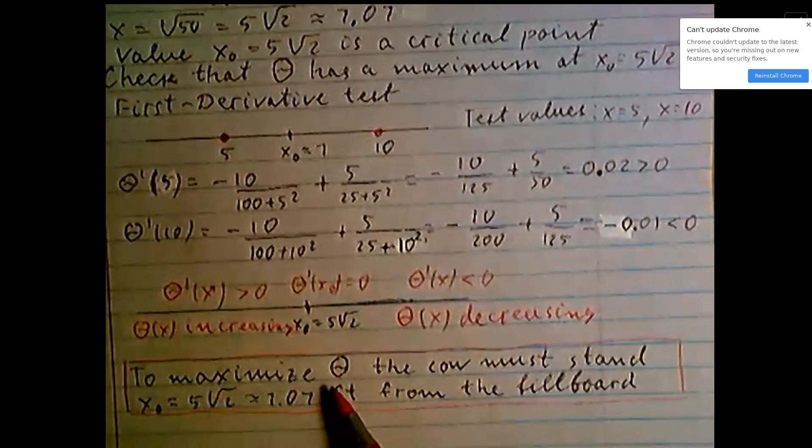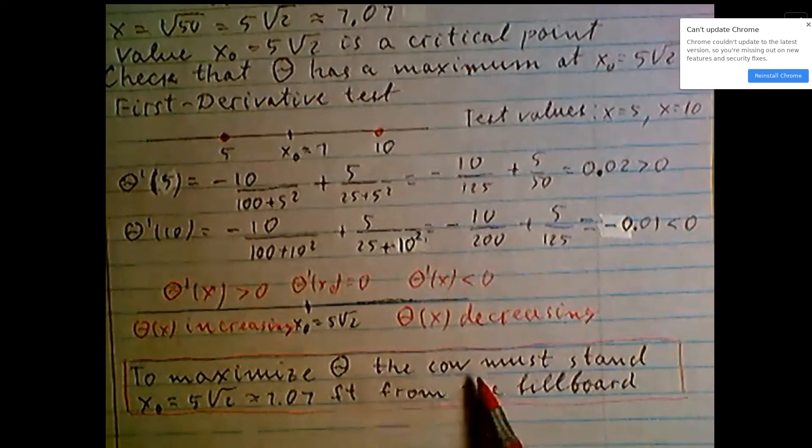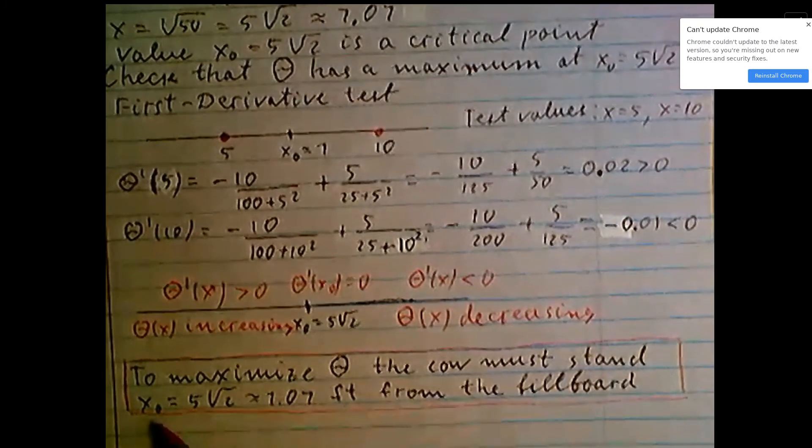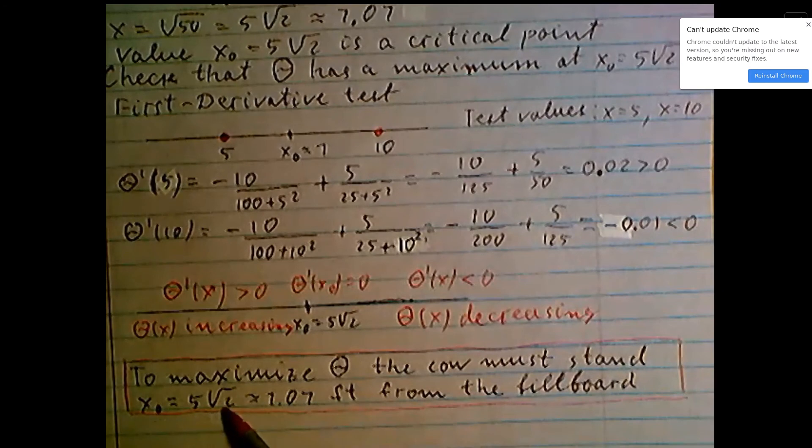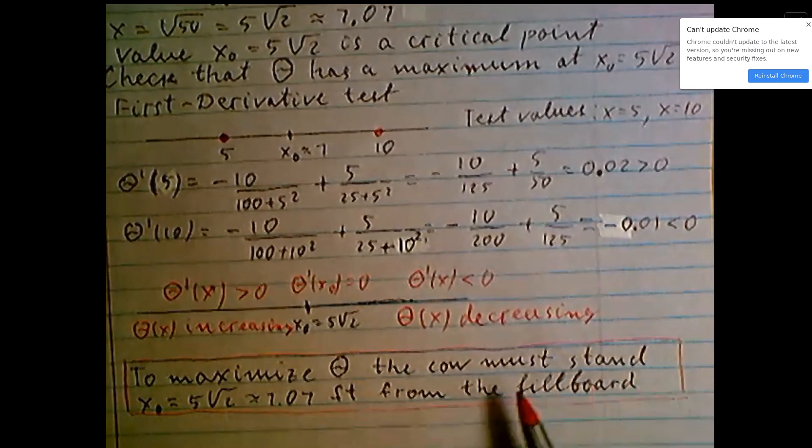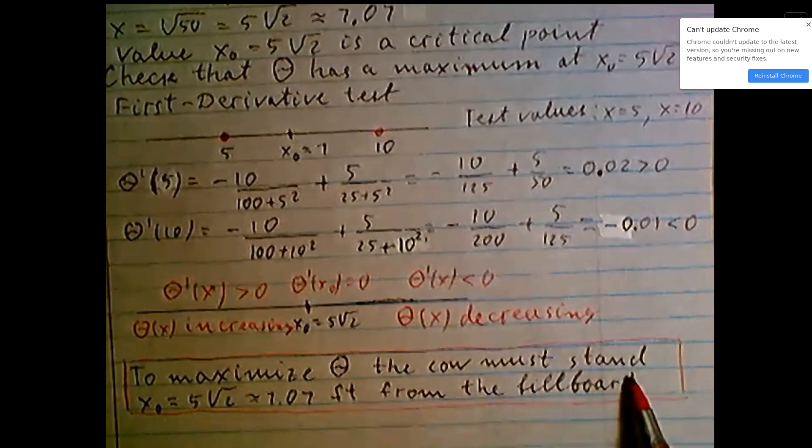Conclusion: to maximize theta, the cow must stand at x₀ approximately equal 5 times square root of 2, approximately 7.07 feet from the billboard.